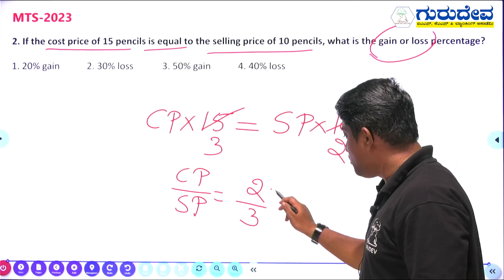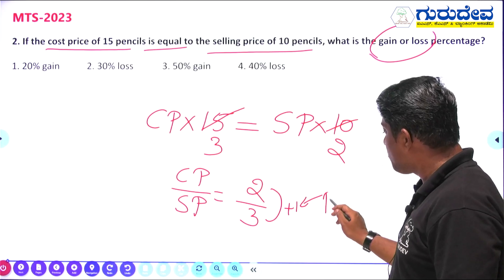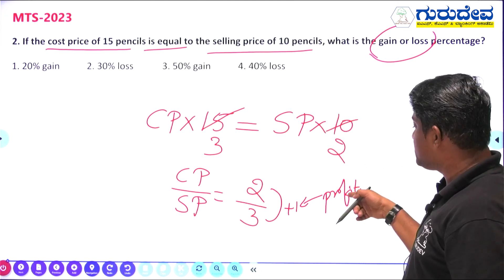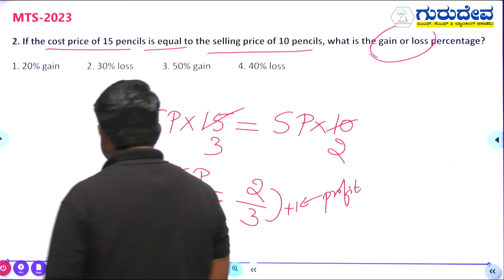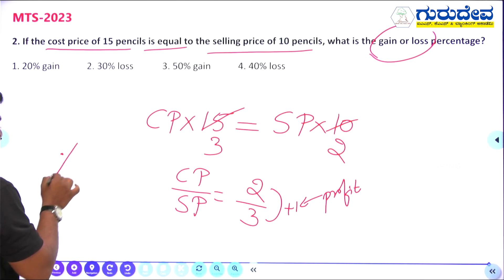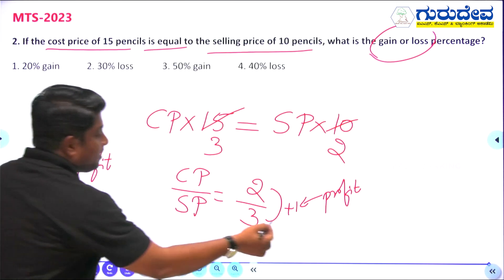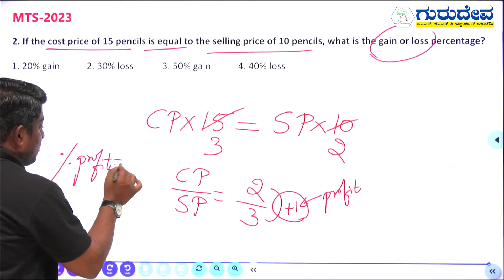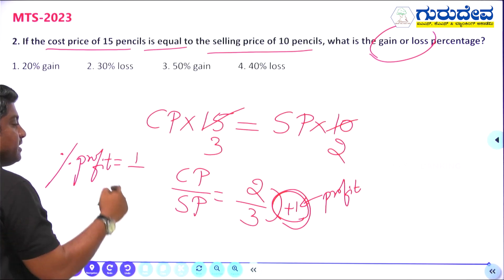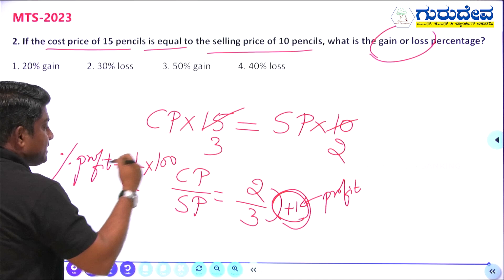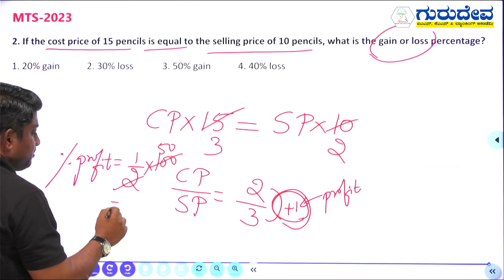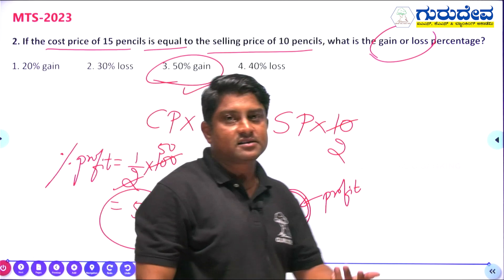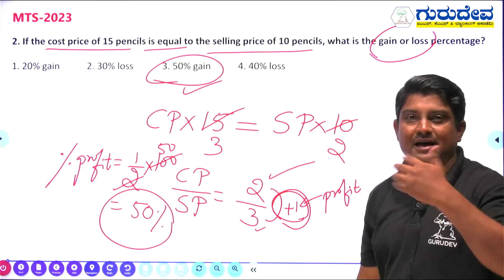The cost price ratio is 2 and selling price ratio is 3 — so there is a profit of 1 ratio unit. Profit percentage = (Profit ÷ Cost Price) × 100 = (1 ÷ 2) × 100 = 50%. So it is a 50% gain. Option number 3 is the right answer. I am purchasing for 2 rupees and selling for 3 rupees, getting a profit.